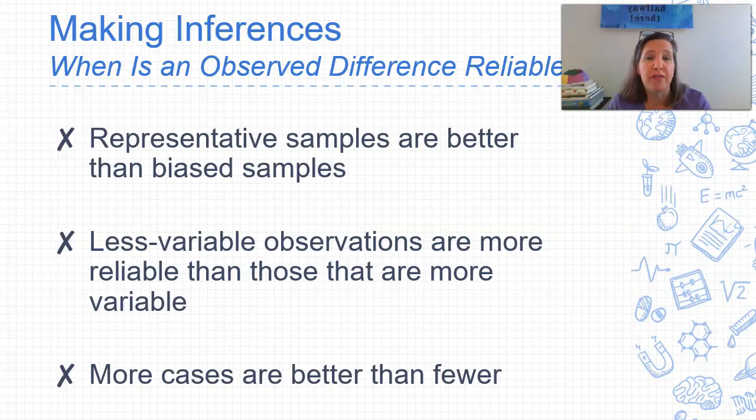When is an observed difference reliable? We want to see a difference. We want to say that variable A caused variable B. So these are just a couple of things that we kind of talked about in the experimentation phase as well, but it comes up again here with inferential statistics. So representative samples are better than biased samples. We already talked about that. We want a sample that's representative of the population that we're trying to study. Less variable observations are more reliable than observations that are more variable. So think about this. We want to see the same behaviors. That is less variable. We want to see the same behaviors. And then more cases are better than fewer. Of course, if we can do an experiment with a thousand or 10,000 people, that's going to be better than one or 10. So we want more cases.